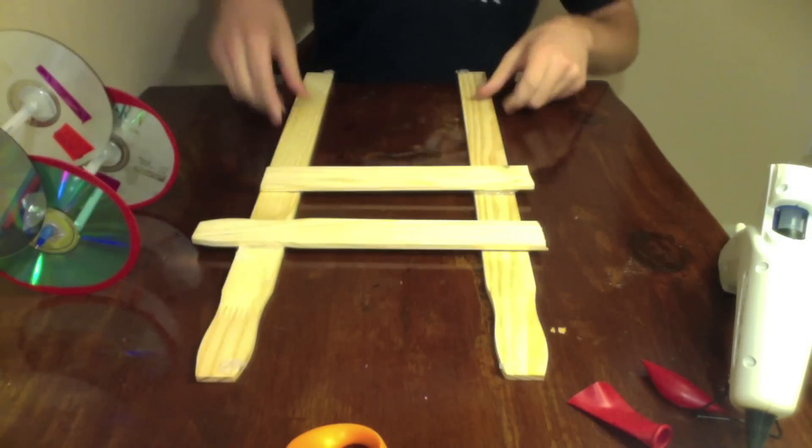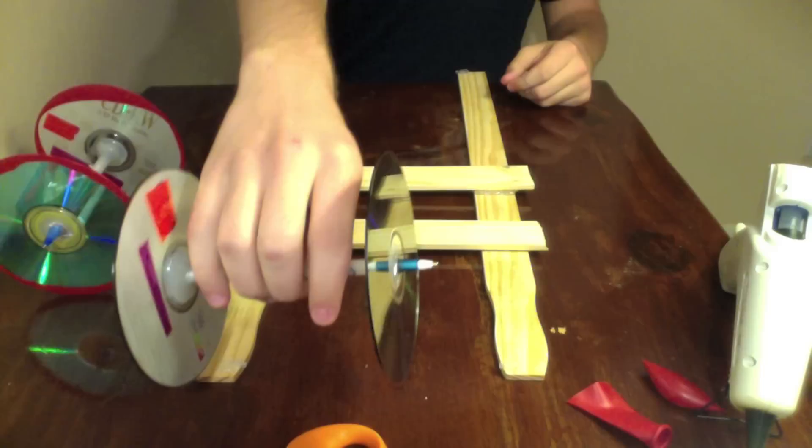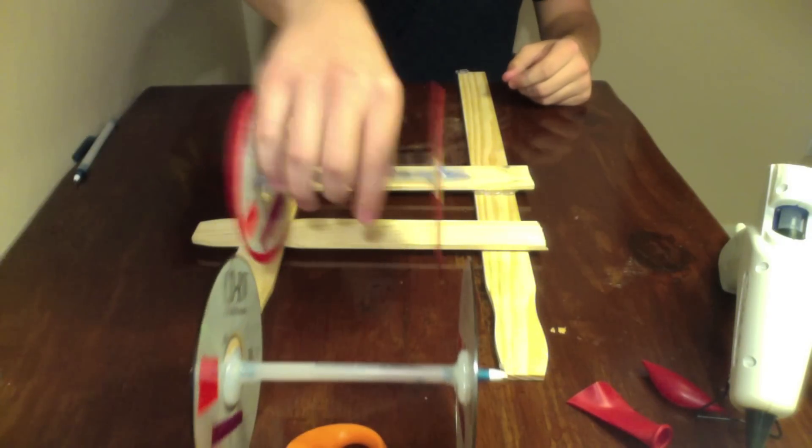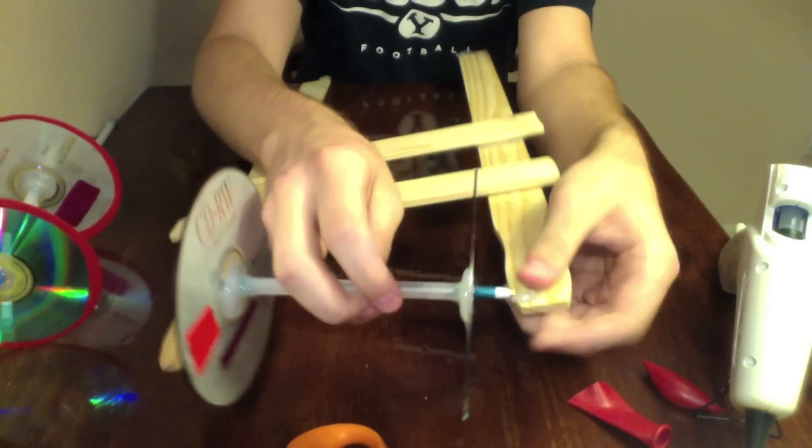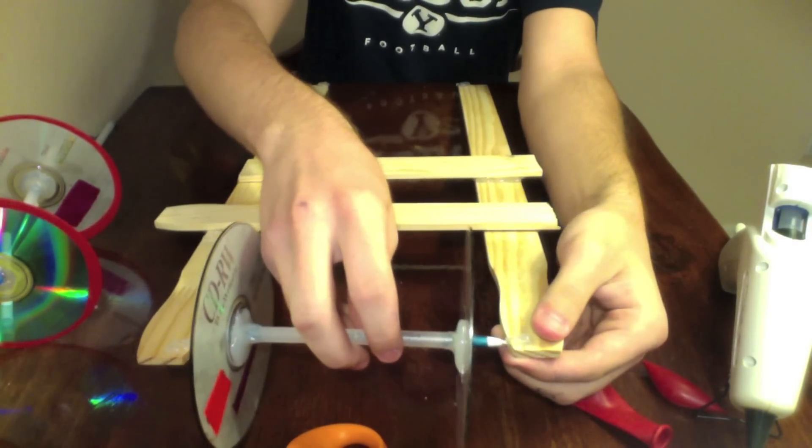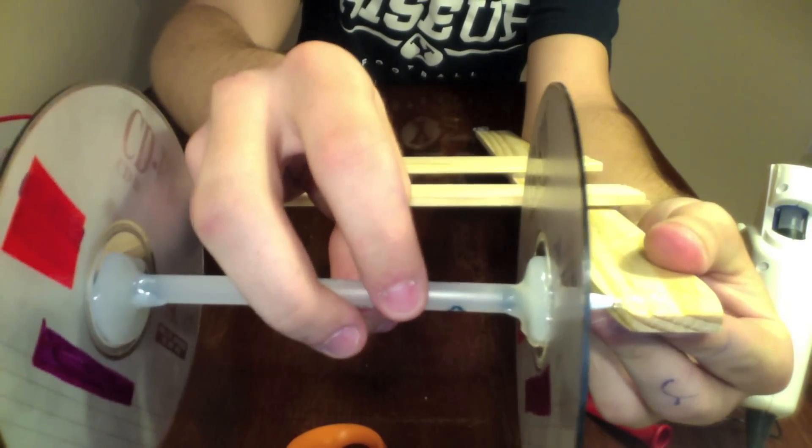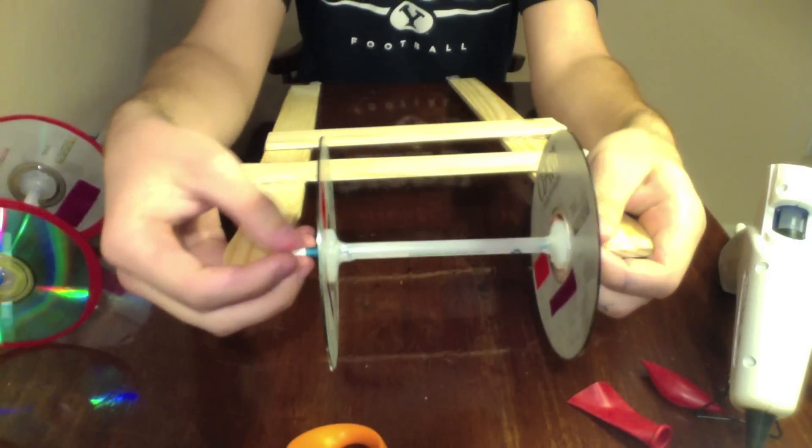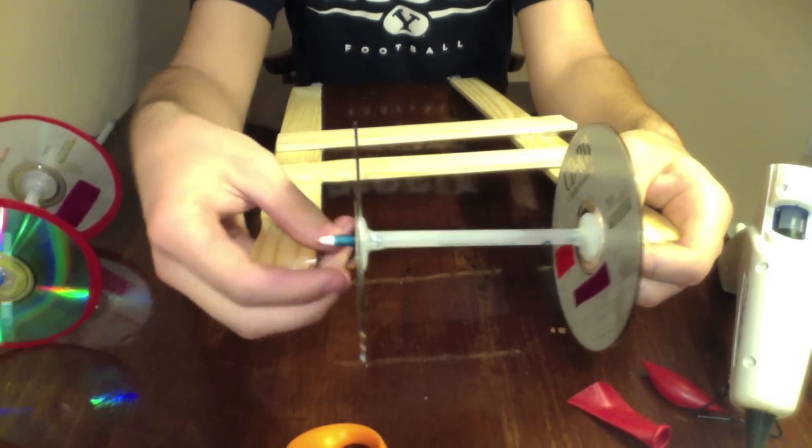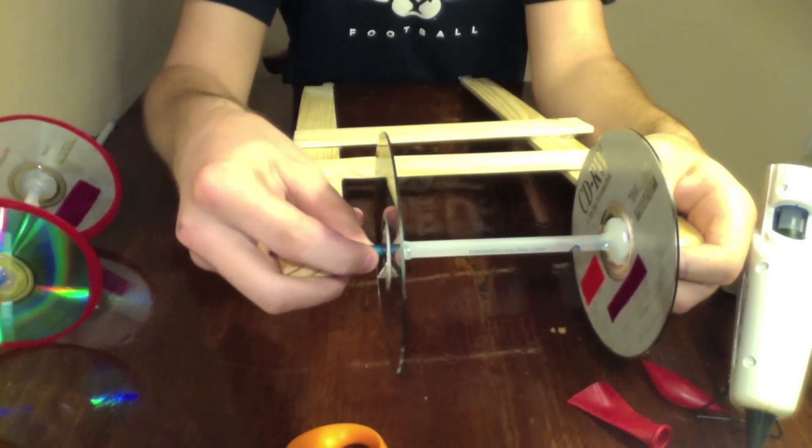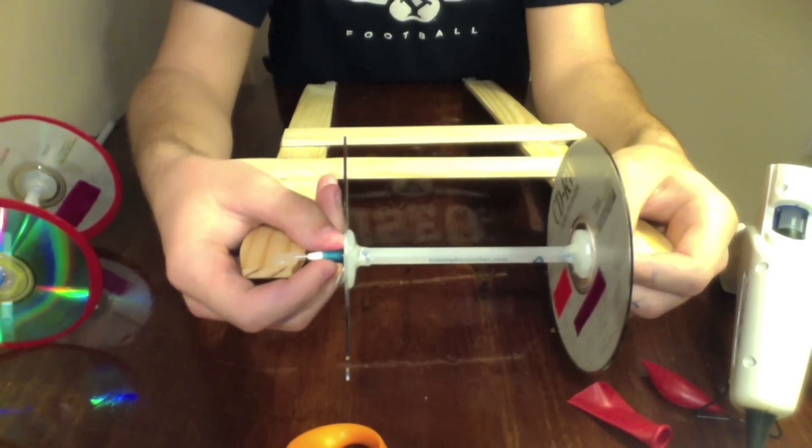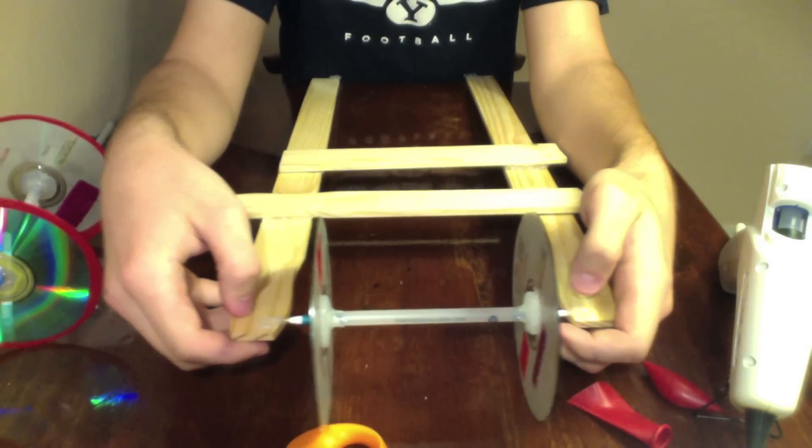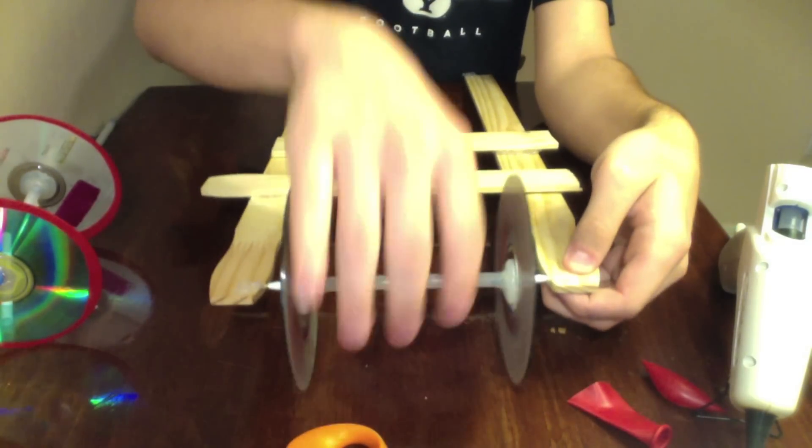So the frame is made and we've got two sets of wheels. The set without balloons is going to go on the front. So the way you put this in is you just slide the pen into this end. And then I made mine a little tight.